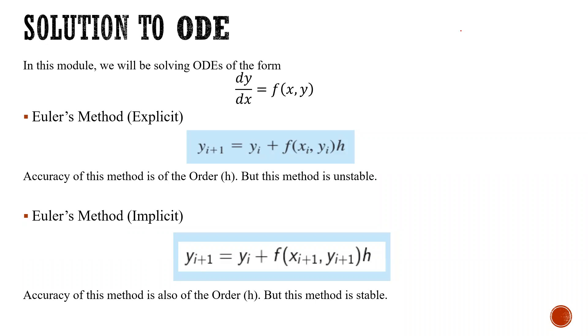Here we will be solving ODEs of the form dy/dx equals f(x,y). The approach we will be using is Euler's method explicit, which gives the equation y_{i+1} equals y_i plus f(x_i, y_i) times h. This is derived from Taylor series expansion. Accuracy of this method is of the order h, but this method is highly unstable.